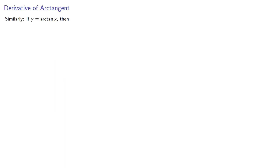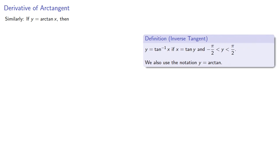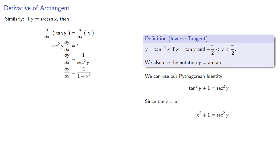Similarly, if y equals arctangent of x, then tangent of y equals x, and implicit differentiation gives us—we can use our Pythagorean identity, and since tangent of y equals x, and so we have the derivative of arctangent.